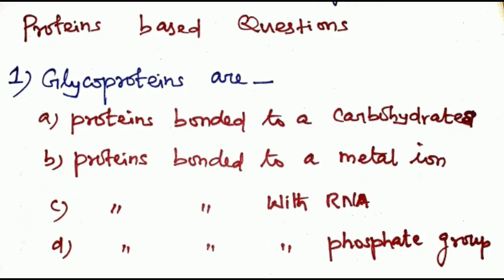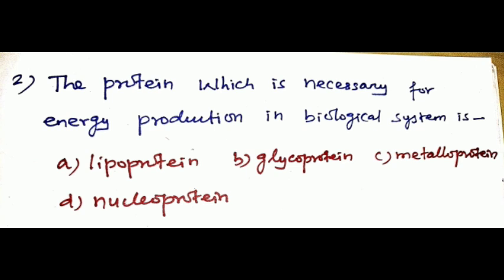Now discuss about some important questions based on proteins. First question: Glycoproteins are? Option A: Protein bonded to a carbohydrate. Option B: Proteins bonded to a metal ion. Option C: Protein bonded with RNA. Option D: Protein bonded with phosphate groups. The answer is Option A: Protein bonded to a carbohydrate. Question number 2: The protein which is necessary for energy production in biological system is? Option A: Lipoprotein. Option B: Glycoproteins. Option C: Metaloproteins. Option D: Nuclear proteins. Energy production in biological system is metalloproteins.